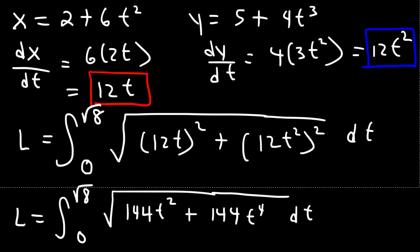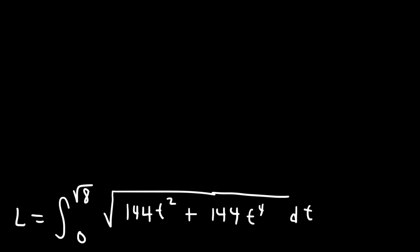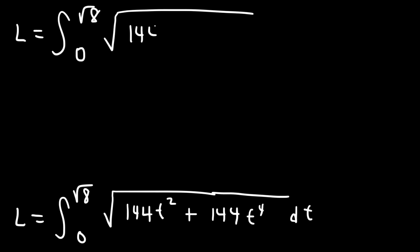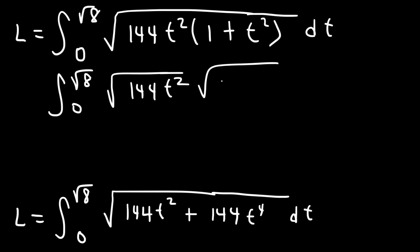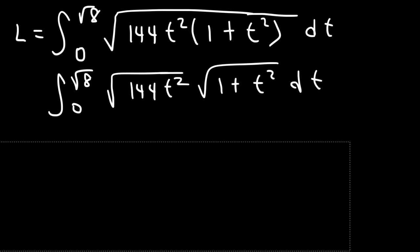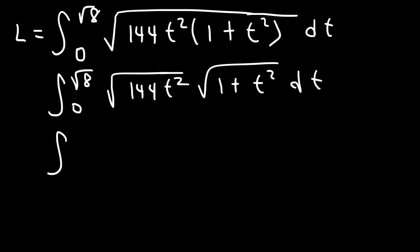We need to factor out the greatest common factor inside the square root, and that's going to be 144t squared. If we take that out we're going to be left with 1 plus t squared. So now at this point we can separate this into two radical expressions. The square root of 144 is 12 and the square root of t squared is just t, so we're going to have 12t times the square root of 1 plus t squared.